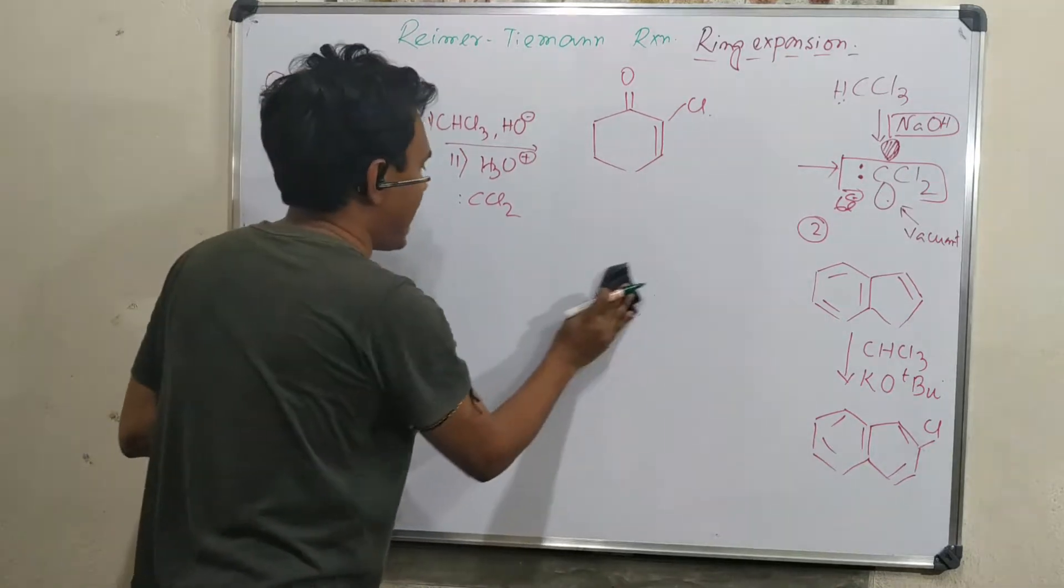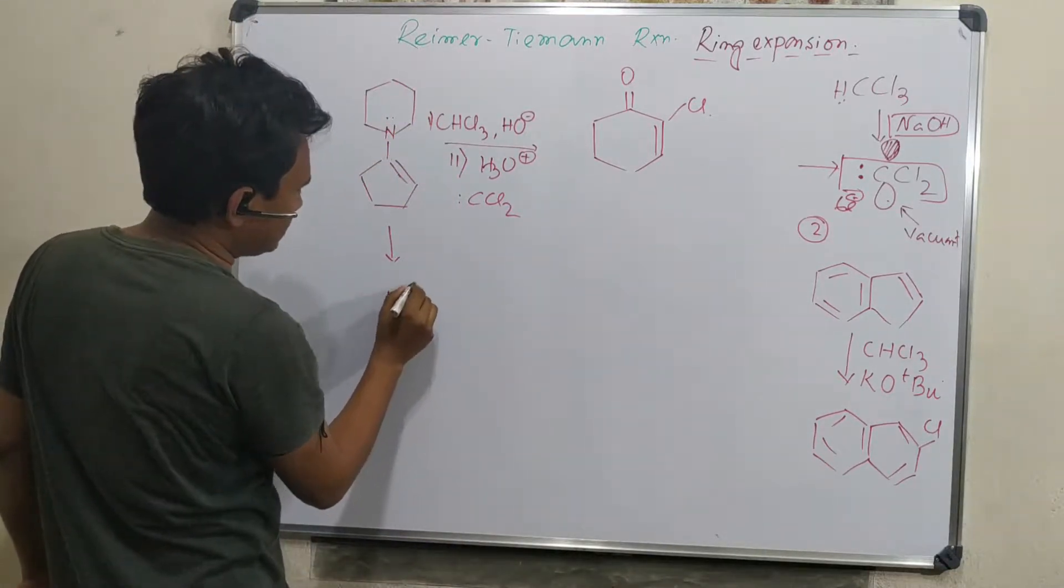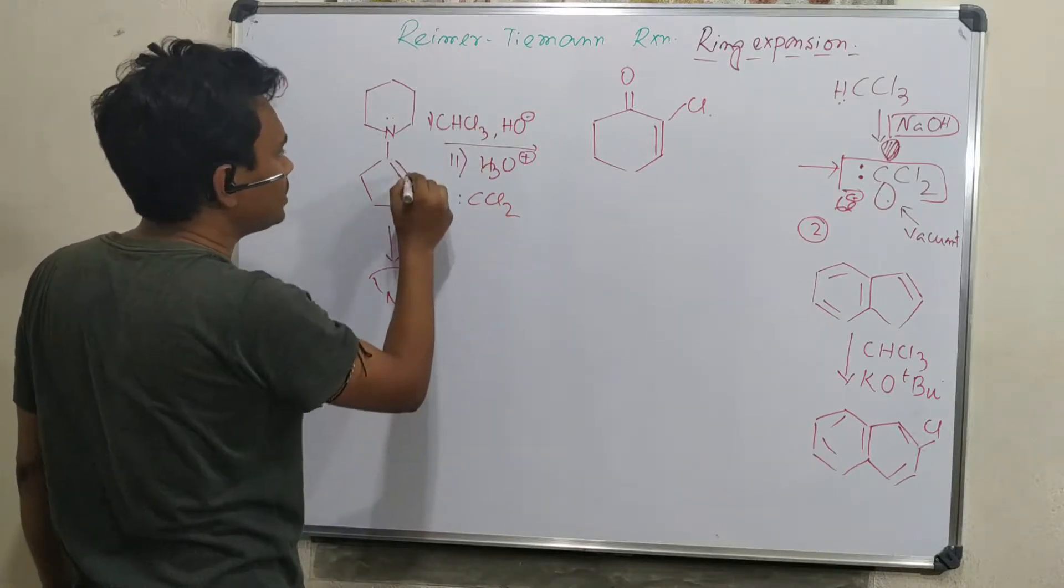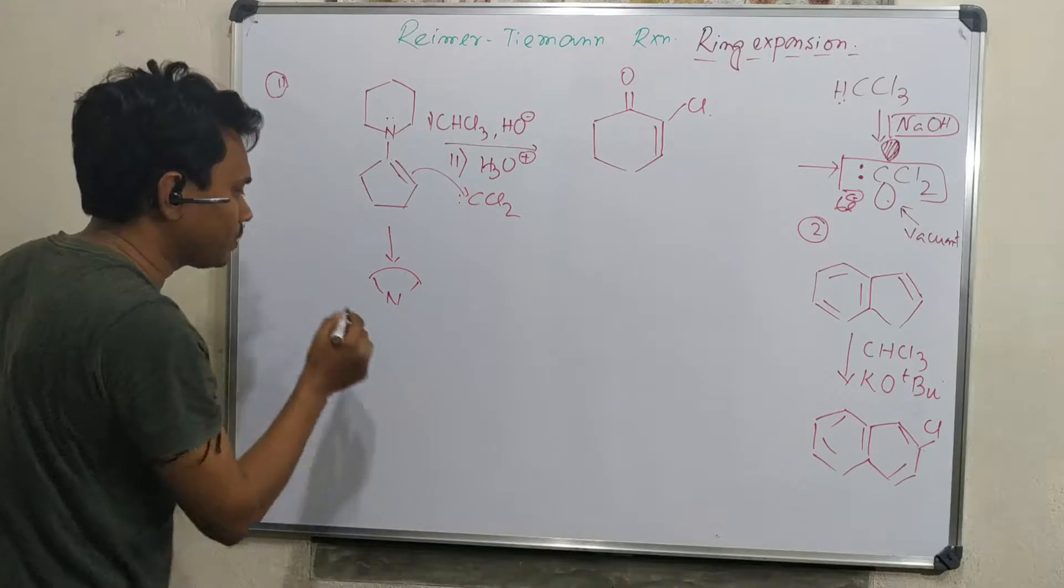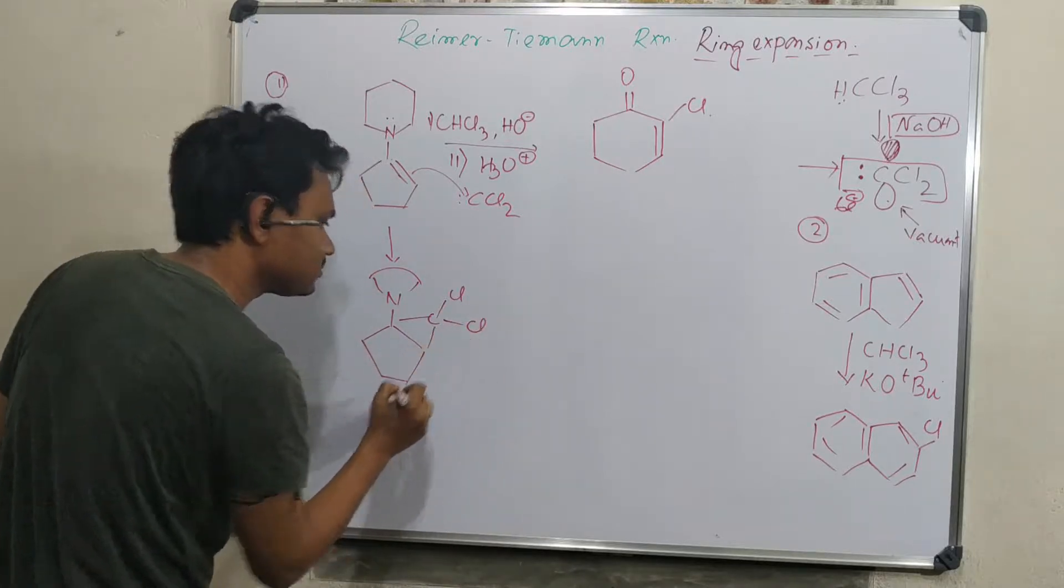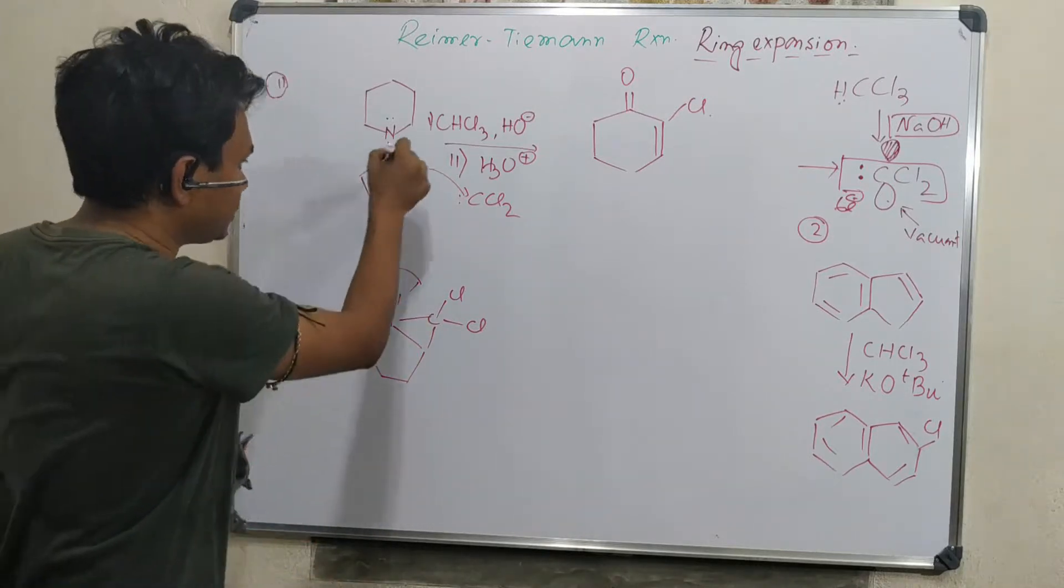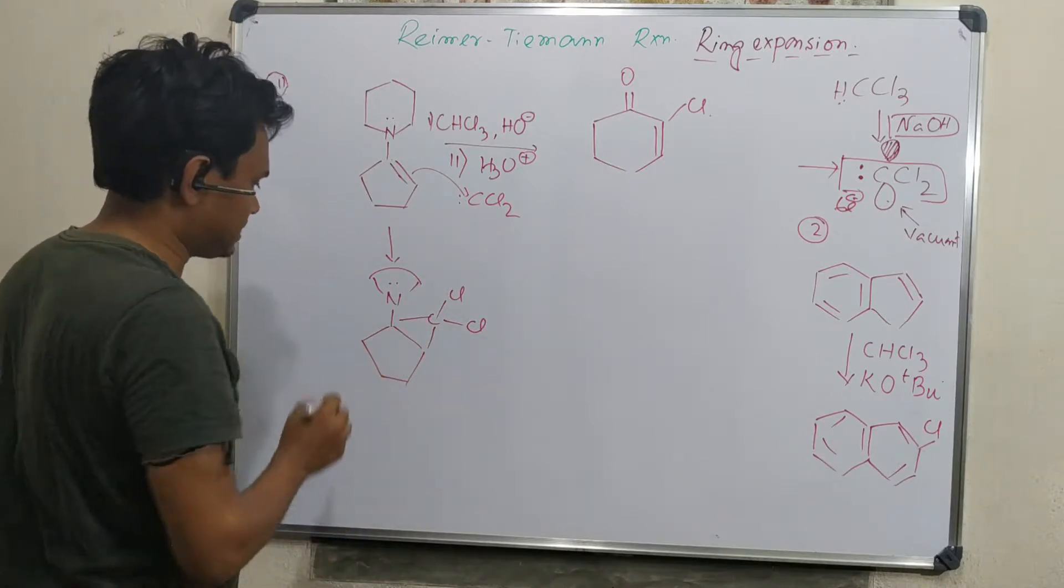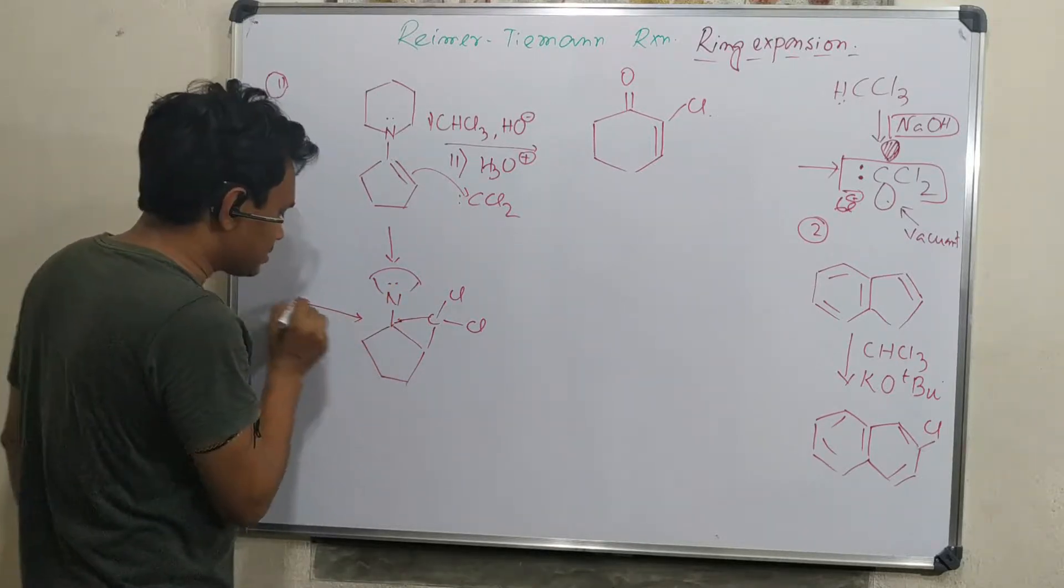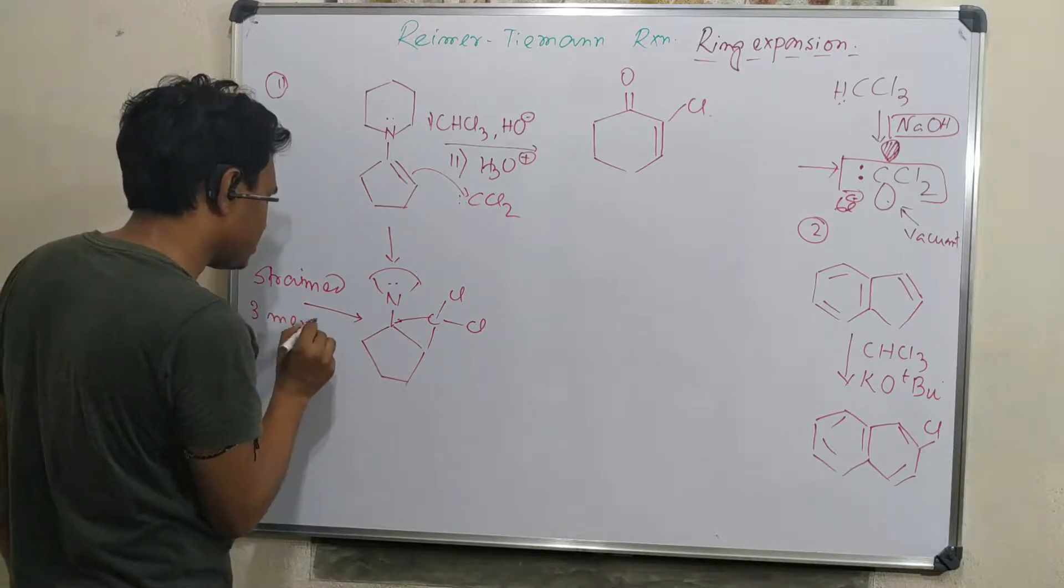Through this conjugation, this double bond becomes more electron rich, and that is one of the main important factors that it reacts very easily. Here the dichlorocarbene acts as an electrophile and adds to the double bond. After addition, it produces a three-member ring. This center is now added to nitrogen, and this is strained due to the three-member ring.